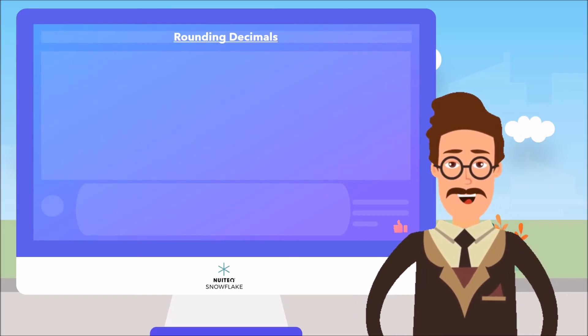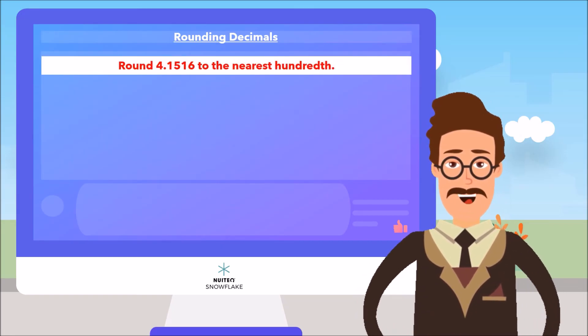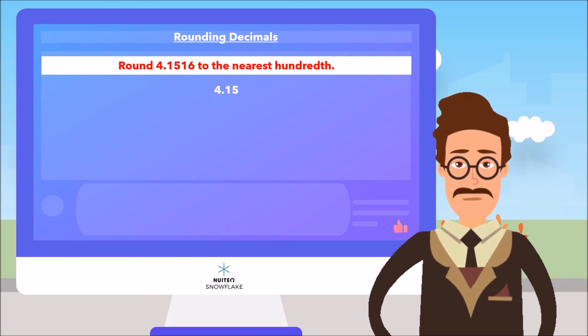For example, if we want to round 4.1516 to the nearest hundredth. Well, the answer will be 4.15, as the next digit, 1, is less than 5.